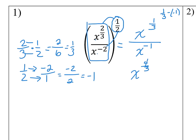Now we know we can convert that into a radical. Remember: in and out — so the 3 goes outside, the 4 goes inside as the exponent.